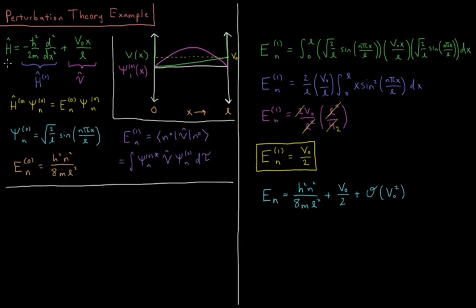So for our particle-in-a-slanted-box model system, we have the particle-in-a-box Hamiltonian, which was the kinetic energy operator, minus h-bar squared over 2 times mass, second derivative with respect to x. That was our reference Hamiltonian H0 of our reference particle-in-a-box system.